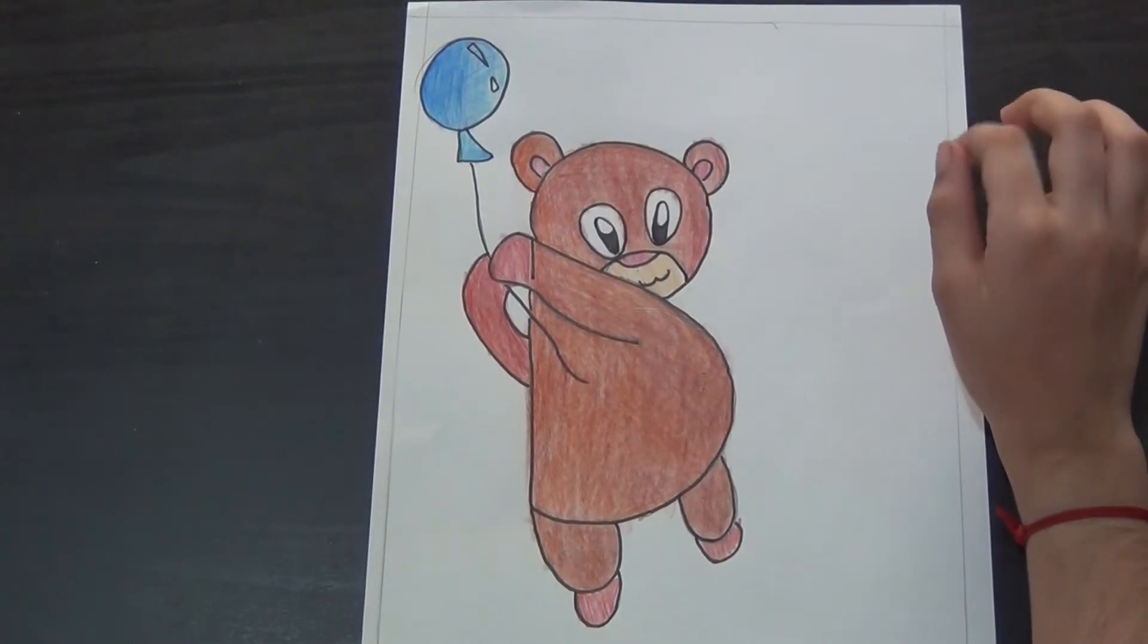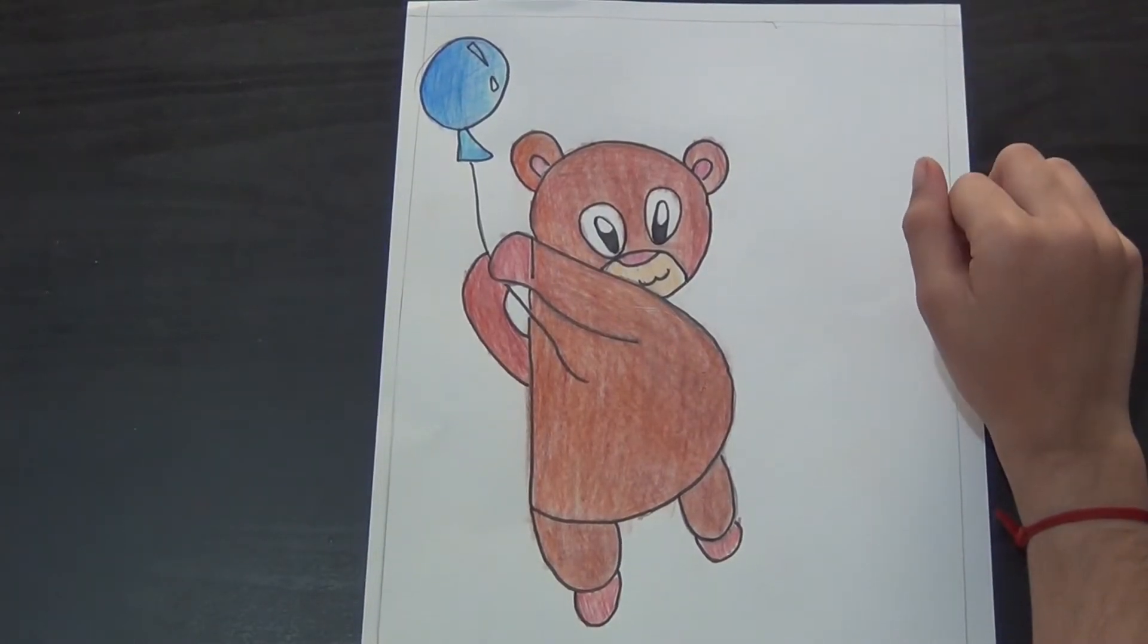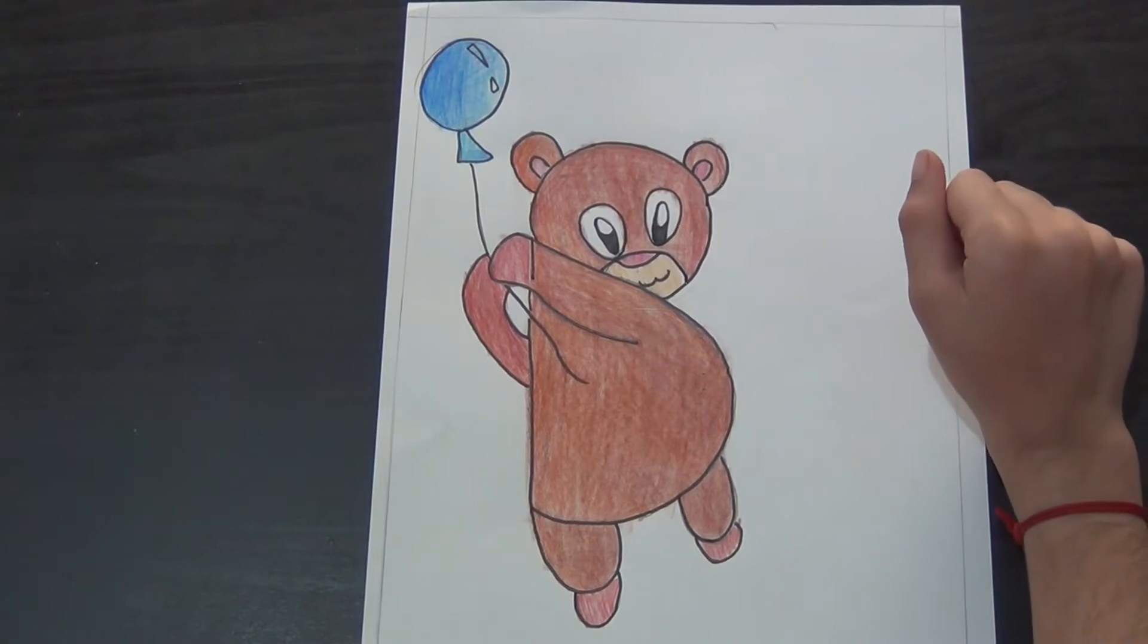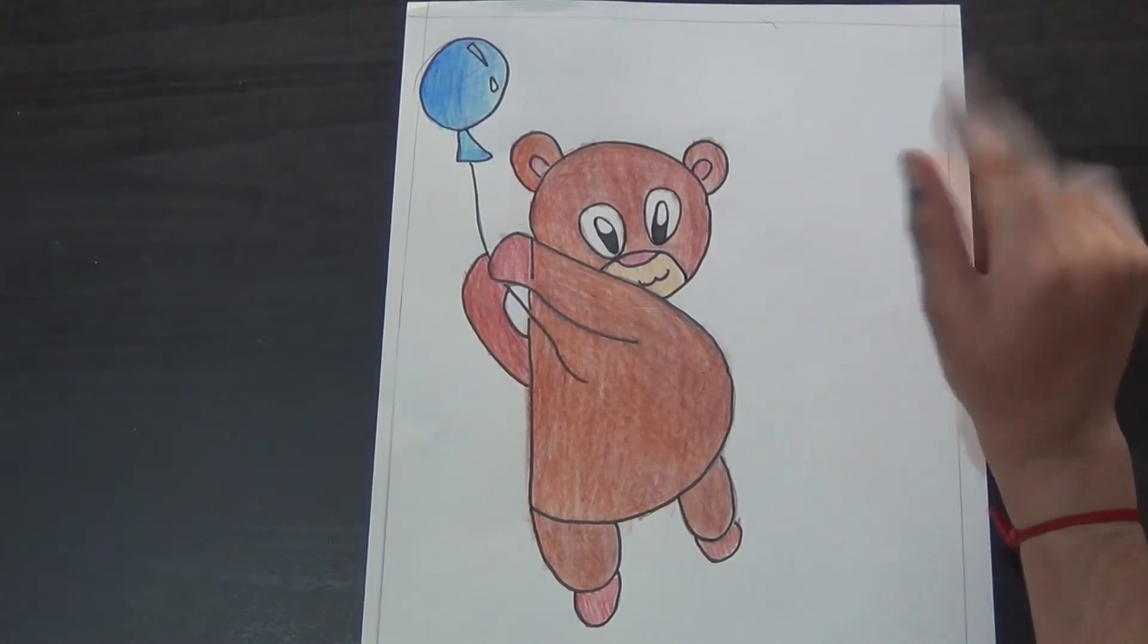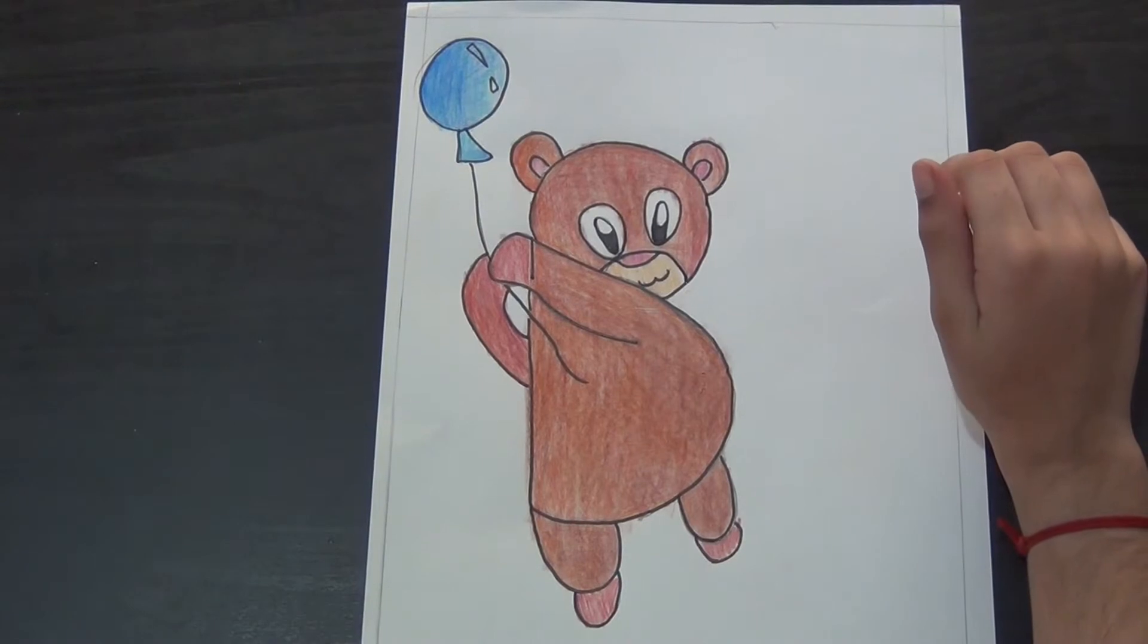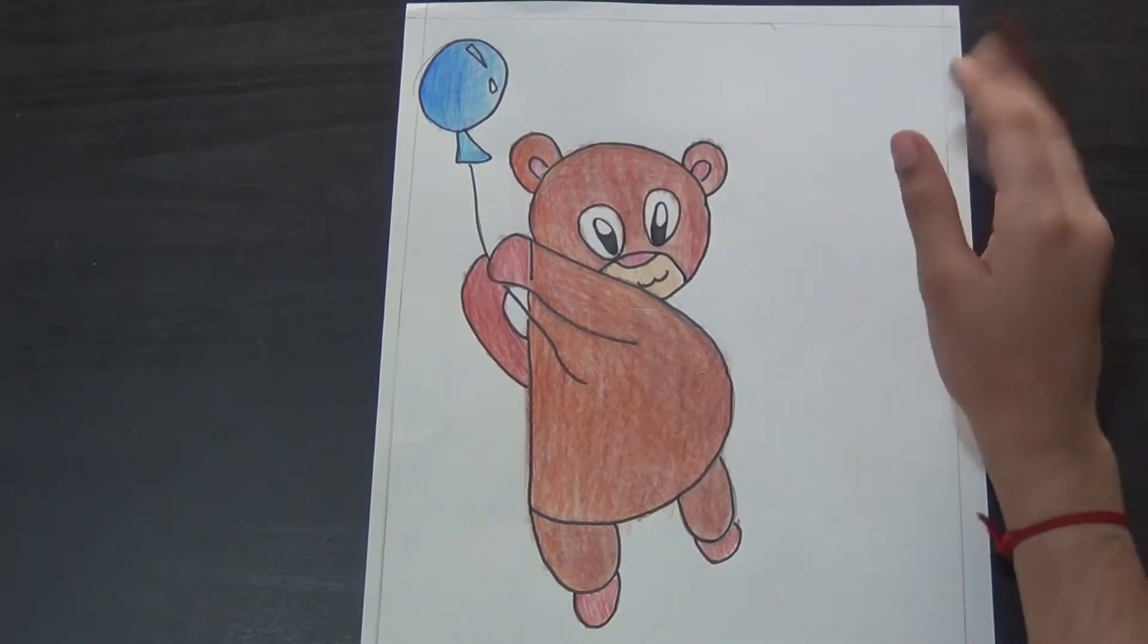Hello everybody, welcome to Let's Draw. Today we are going to draw a cute little bear using the alphabet B. Bears are omnivorous and have excellent sense of smell. So let's begin.